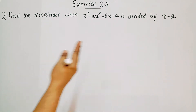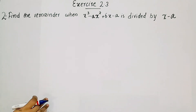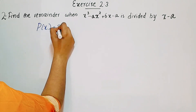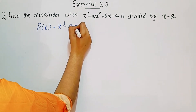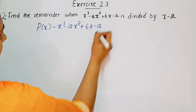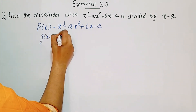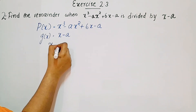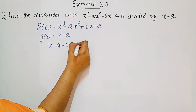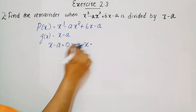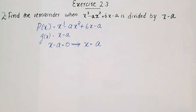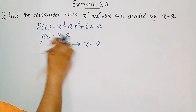G of x tells us what to do. P of x is equal to x³ minus ax² plus 6x minus a. G of x is equal to x minus a — this is the divisor. We make g of x equal to zero: x minus a equals 0, so x equals a.